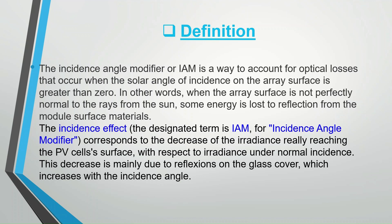The incidence effect, designated as IAM for incidence angle modifier, corresponds to the decrease of the irradiance really reaching the PV cell surface with respect to irradiance under normal incidence. This decrease is mainly due to reflections on the glass cover, which increases with the incidence angle.